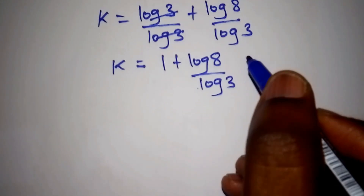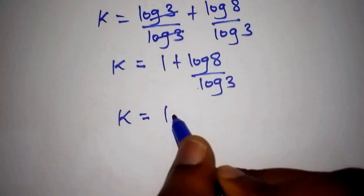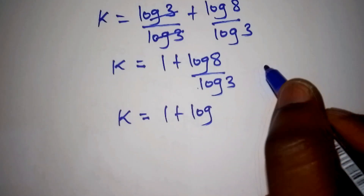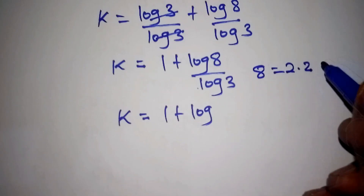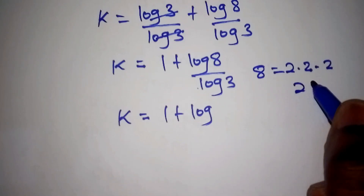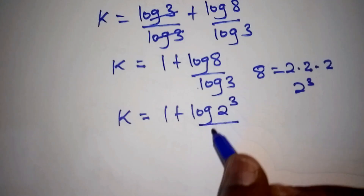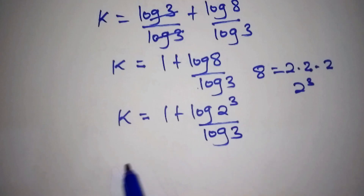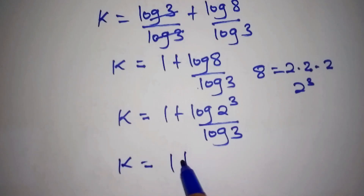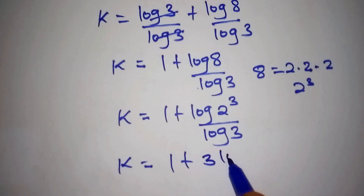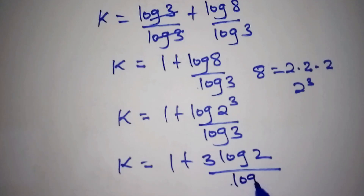So k equals 1 plus — and log of 8 can be rewritten, since 8 equals 2 multiplied by 2 multiplied by 2, which is 2 to the power of 3. So log of 8 becomes log of 2 to the power of 3, which equals 3 times log of 2, all over log of 3.